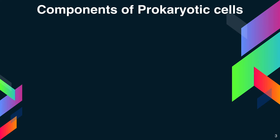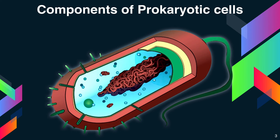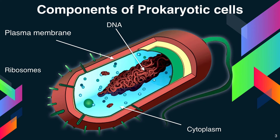Coming to the components of prokaryotic cells — all cells share four key components: the plasma membrane, an outer covering that separates the cell's interior from its surrounding environment; cytoplasm, consisting of a jelly-like cytosol inside the cell and cellular structures suspended in it; DNA, the genetic material of the cell; and ribosomes, molecular machines that synthesize proteins.